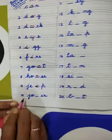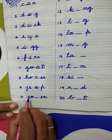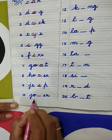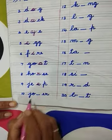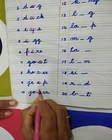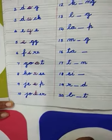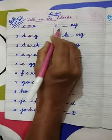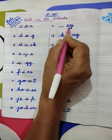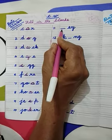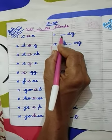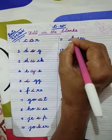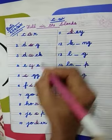Number 10: Joker. Spelling of joker: J-O-K-E-R. Which letter is missing here? Letter K. We have to write here letter K and complete the weight joker. Number 11: dash E-Y. First letter is missing. This is the spelling of the weight key. First letter is K. Letter K we have to write here and complete the weight key.